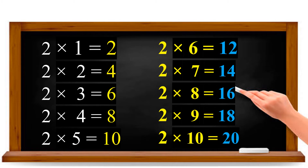Once again we will say the 2 table. 2 ones are 2. 2 twos are 4. 2 threes are 6. 2 fours are 8. 2 fives are 10. 2 sixes are 12. 2 sevens are 14. 2 eights are 16. 2 nines are 18. 2 tens are 20.